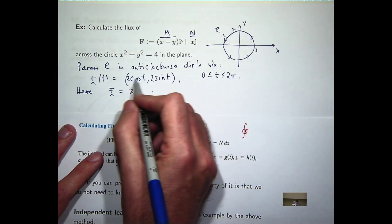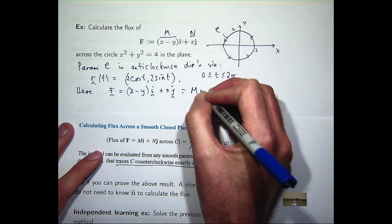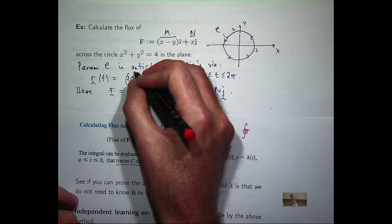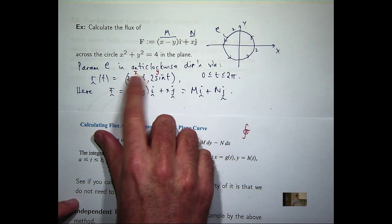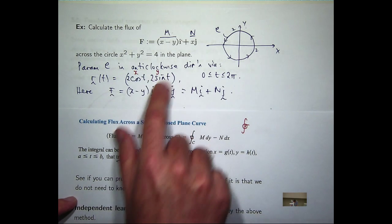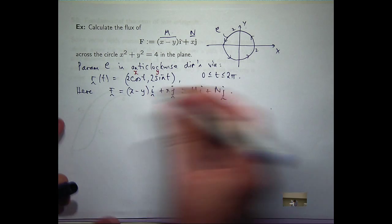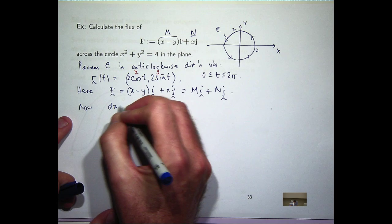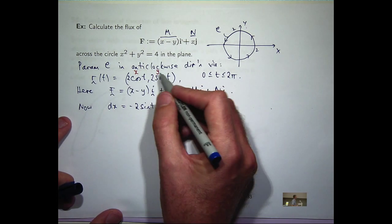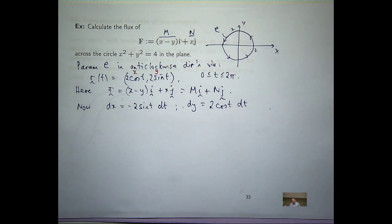So you can also, of course, think of this as 2 cosine t i plus 2 sine t j. So think of our parameterization. This refers to the x component, this refers to the y component. To compute these differentials, dx and dy, all I want to do is take the differentials up here and put them in and calculate them with some differential dt. So if I take the differential here, the dx is just going to be minus 2 sine t dt from x equals 2 cosine t. And from y equals 2 sine t, dy is going to be 2 cosine t dt.